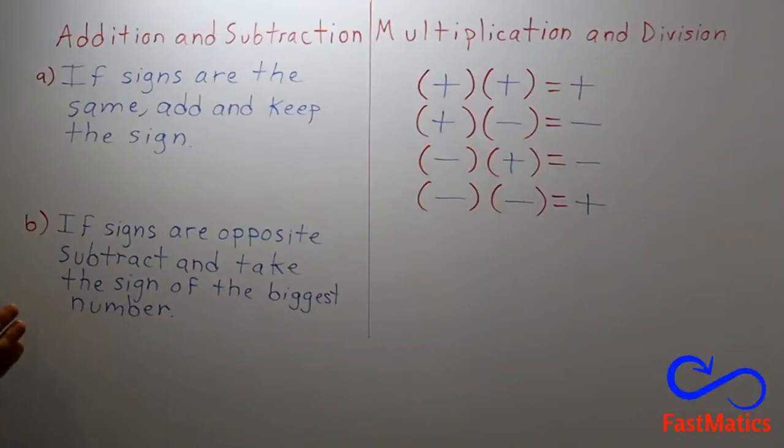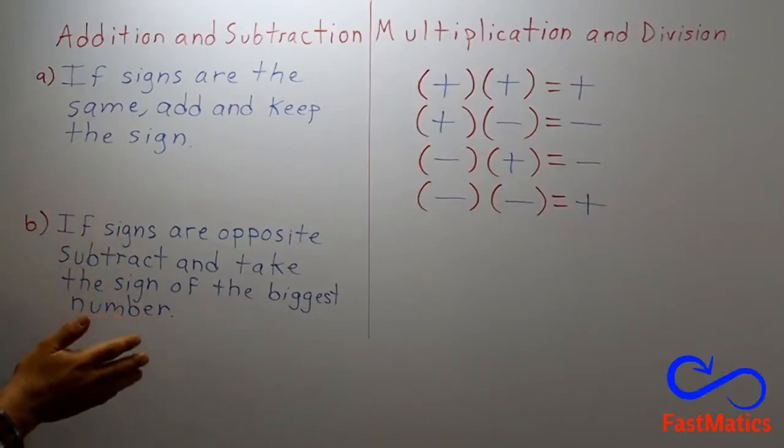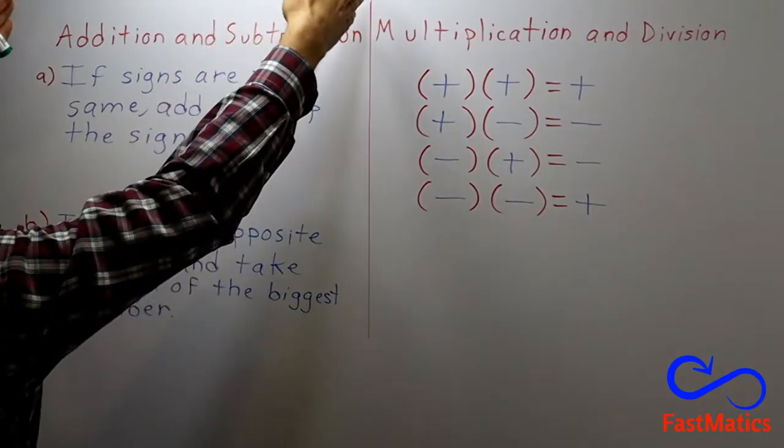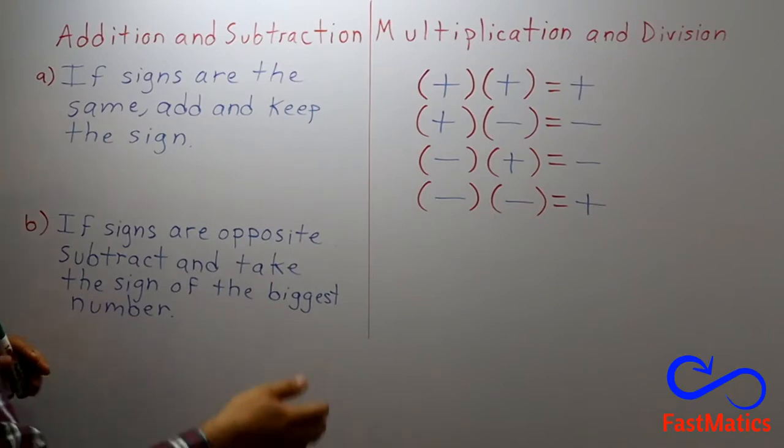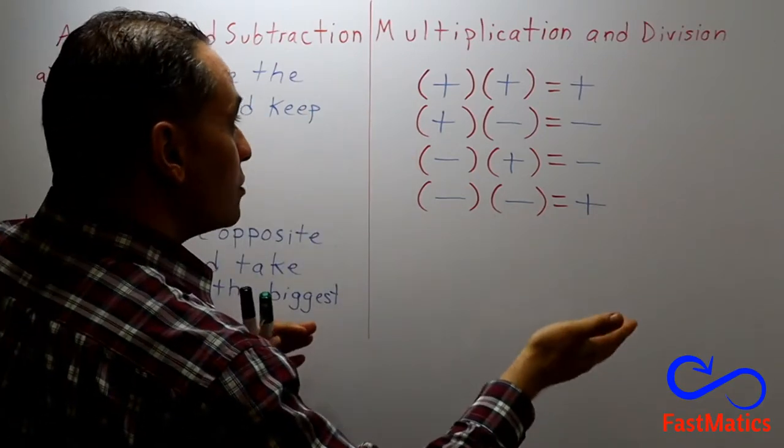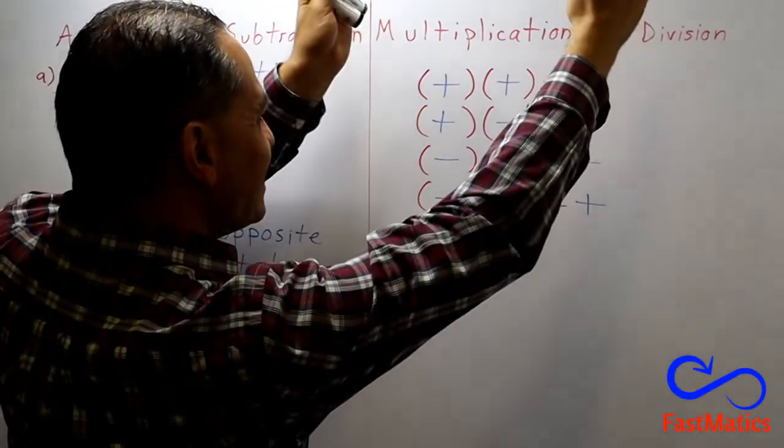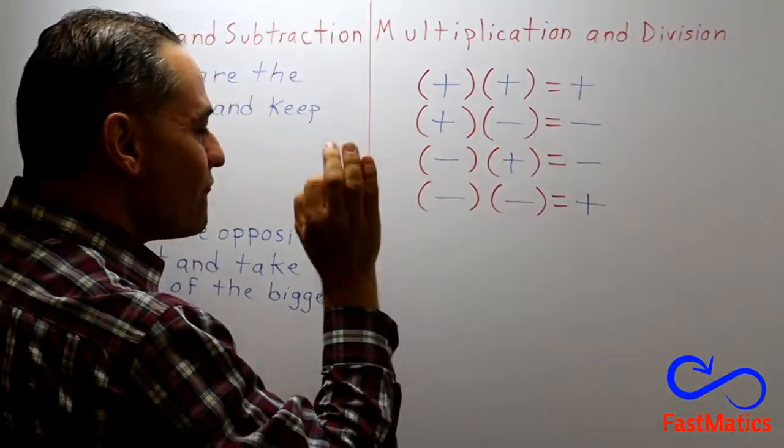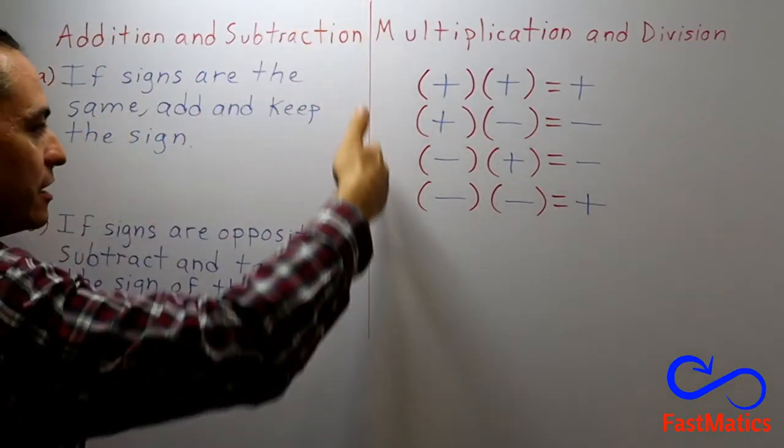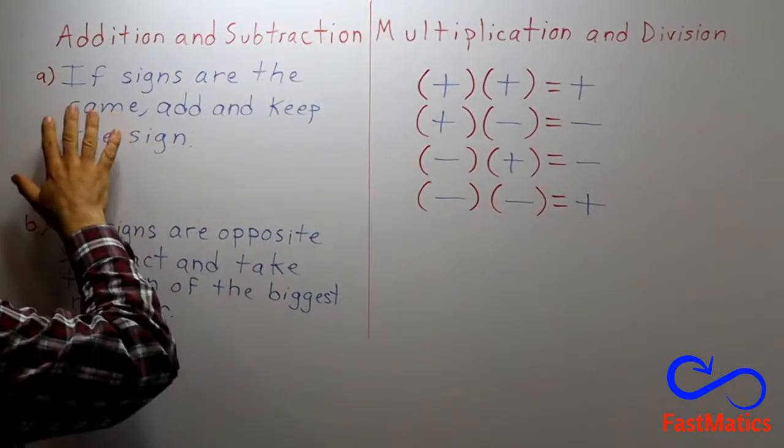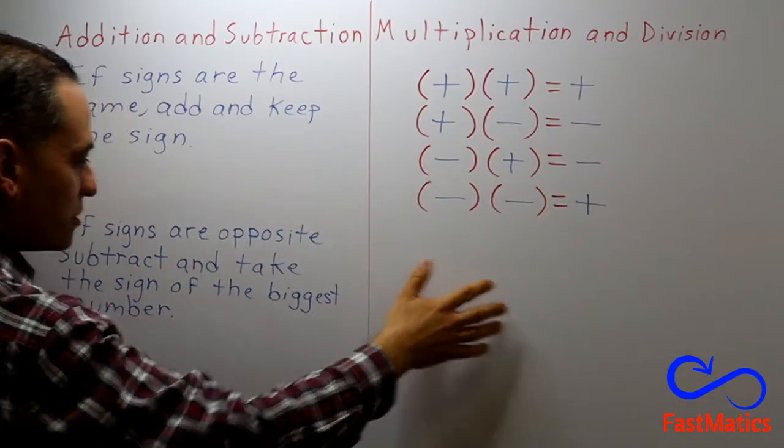First of all, you have to remember very well that there are rules for the signs when you are adding and subtracting numbers and there are other rules for the signs when you are multiplying or dividing numbers. It is very important. That's why I am dividing the blackboard in order to see those different rules.